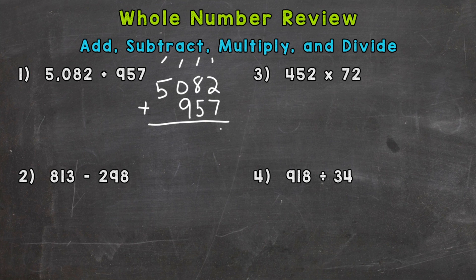So 2 plus 7 is 9. 8 plus 5 is 13 — carry the 1. 1 plus 9 is 10 — carry the 1. And 1 plus 5 is 6. So the answer is 6,039.